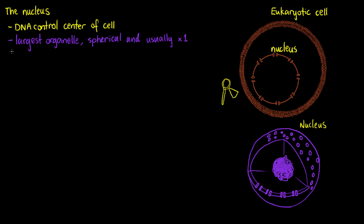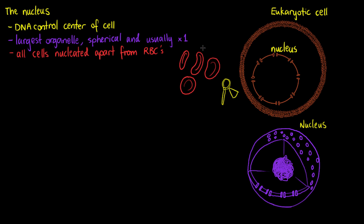Some cells do have more than one nucleus, but for the majority they only have one. There are actually cells in our body that do not have a nucleus at all. All cells are nucleated apart from one type — our mature red blood cells. I'll draw a few of those here so that we remember. Mature red blood cells do not have a nucleus.